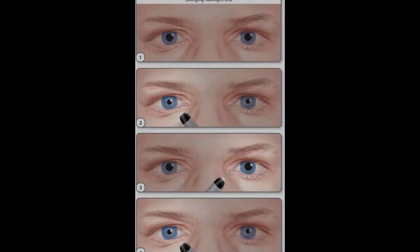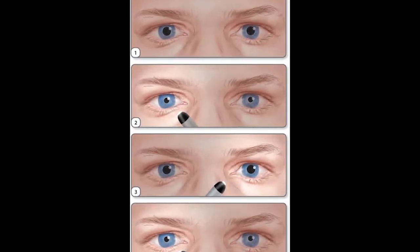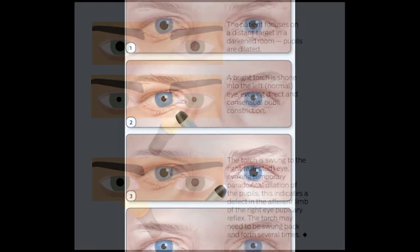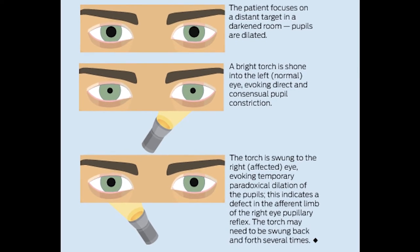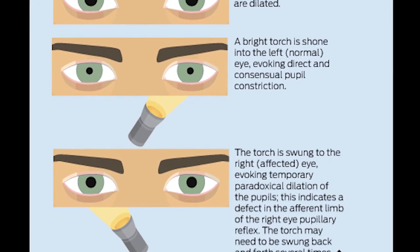So if you shine a flashlight in that eye, you're not going to get any constriction and it's going to look like dilation. And then when you move the light from one eye to the other eye, the other eye is going to constrict and both pupils are going to constrict.